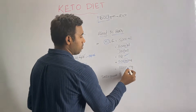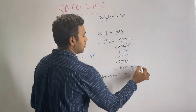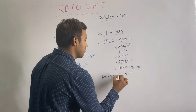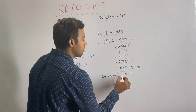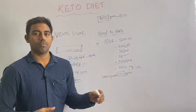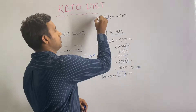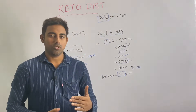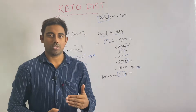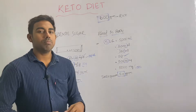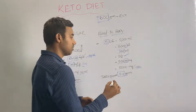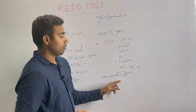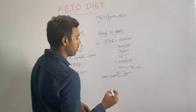So we have 5,000 mg, and 5,000 divided by 1,000 equals 5 grams. There are only 5 grams of sugar in your blood at any time. This is what medical and health organizations recommend as normal.